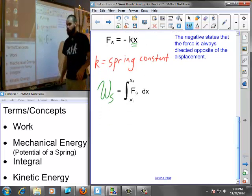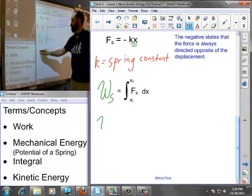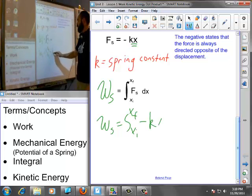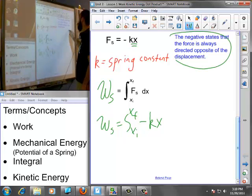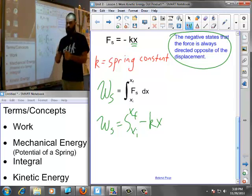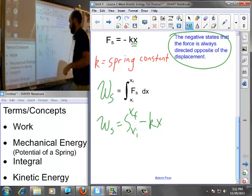So we'll look into this integration of the work done on a spring. It would start out by setting up our definite integral and breaking down force of a spring into negative k times x. By the way, keeping in mind that the negative sign is there to say that the force is always directed opposite to the displacement. If I stretch a spring outwards, the force is directed inwards to try to accelerate it back to rest, equilibrium position.